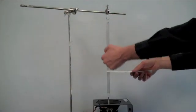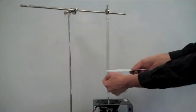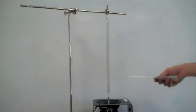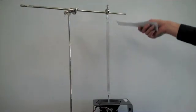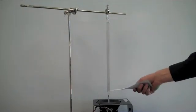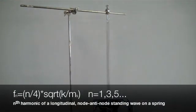So note that we have about 2 thirds of the length, and about 1 third of the length here. So this actually acts like a node-anti-node wave. So this would be just like a tube that is closed on one end and open on the other. And so the formula for that is actually n over 4 times the square root of k over the mass of the spring.